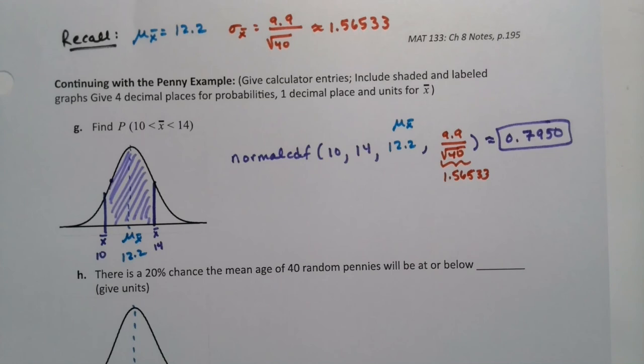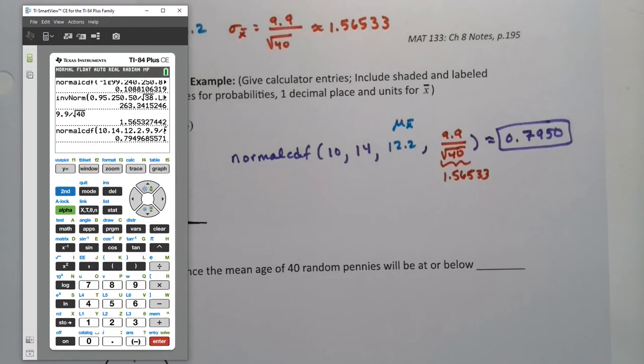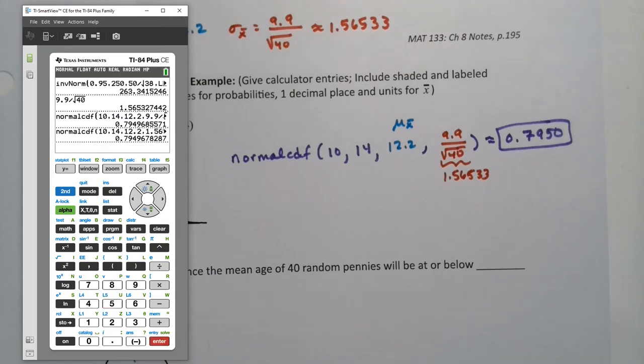If you use the decimal, it should be very similar. So if I go up here and grab that same thing, if you use the decimal rather than the square root, you should still be okay. There'll be 1.56533 in here. And you can see 7, 9, 4, 9, 6 still works out, and then it starts losing accuracy after that.